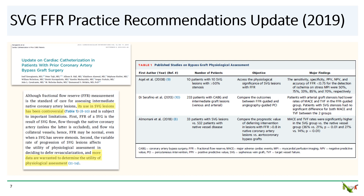There was a similar message in the practice recommendation updates for CABG patients published in JACC Cardiovascular Interventions in 2019. In that article, they noted three small studies, including the 2018 study, which had varying results and concluded that the use of FFR to assess SVG lesions remains controversial, and that more data is needed to determine how to use it in saphenous vein grafts. So in my mind, whether the appropriate cutoff for SVGs should be 0.8 or something else is still unclear. I personally suspect that the threshold should probably be a little bit higher.